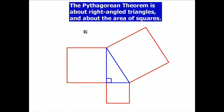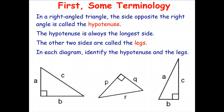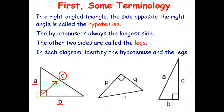The Pythagorean theorem is a statement about right-angled triangles and also about squares. First we need to look at some terminology. In every single right-angled triangle there are obviously three sides, and the side that's opposite the right angle — which also turns out to be the longest side — is called the hypotenuse. So for this triangle, C is called the hypotenuse.